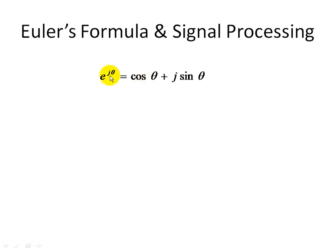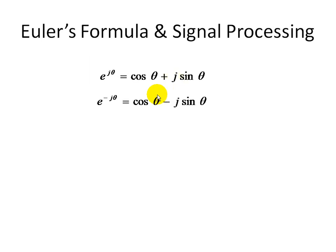Starting with E to the J theta, where theta is a real number — used here because we're relating it to the trigonometric cosine and sine functions — J is the imaginary number, which is the square root of negative one. From this formula, we can get the conjugate: E to the minus J theta is equal to cosine of theta minus J sine of theta.